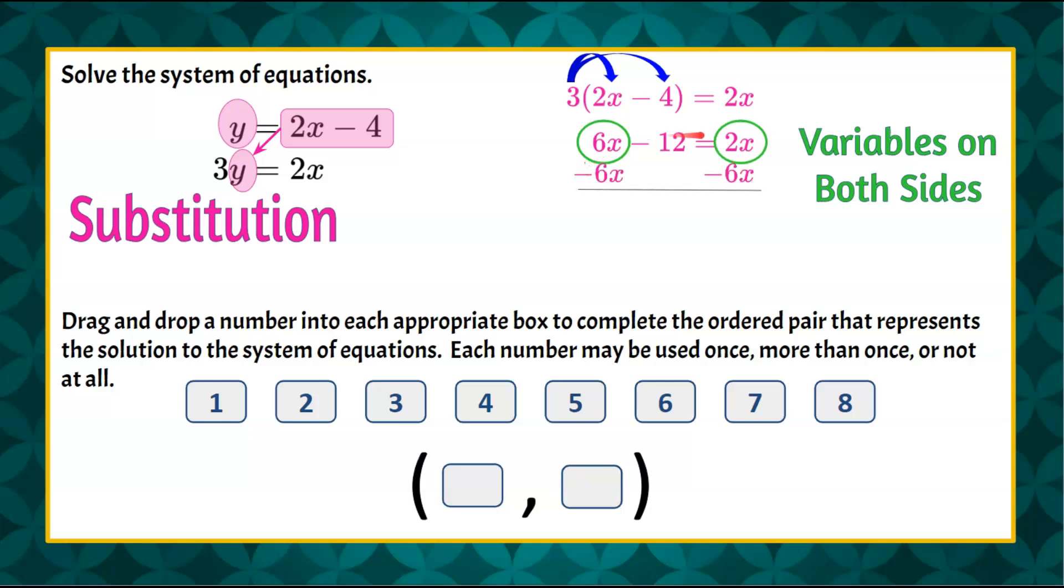What I do to one side, I must do to the other. So we're going to subtract 6x from both sides to create our zero pair, and we're left with negative 12, and 2x and negative 6x are negative 4x.